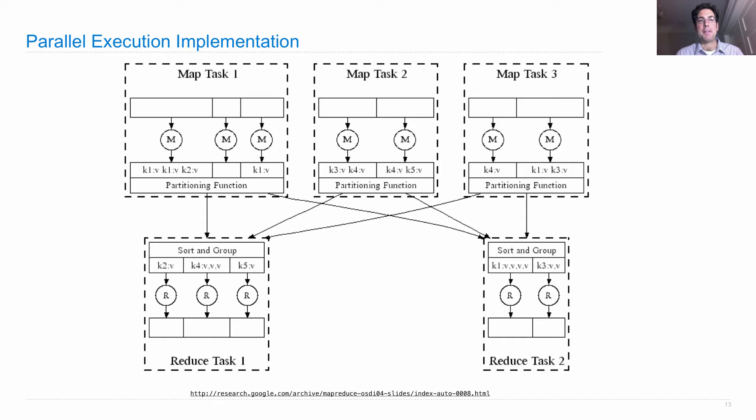What actually happens in the parallel execution implementation is that there are multiple tasks, perhaps running on different machines, each of which either run some mapping or some reducing.